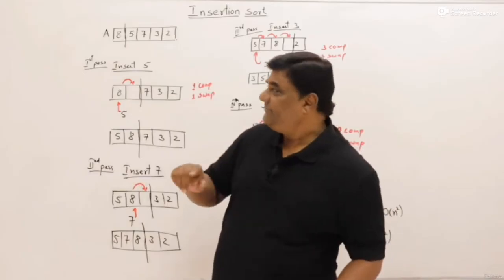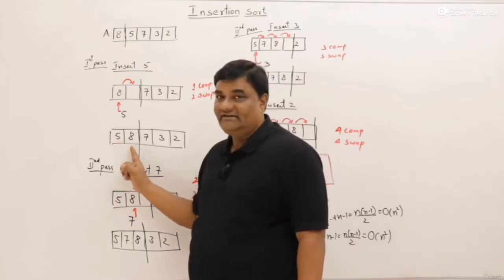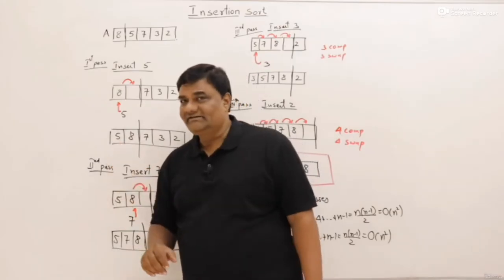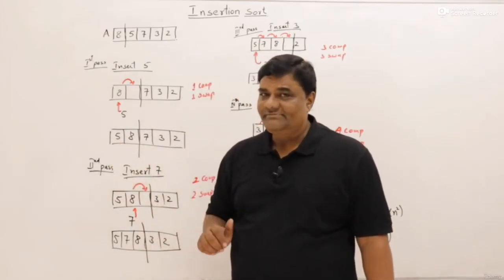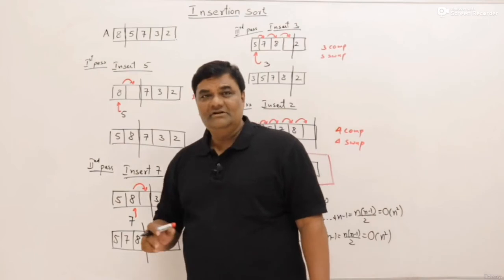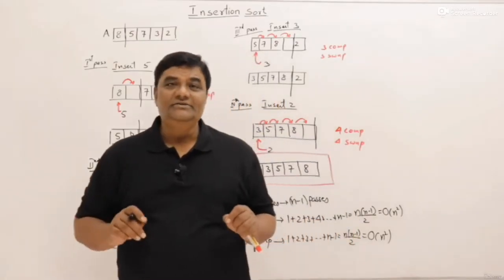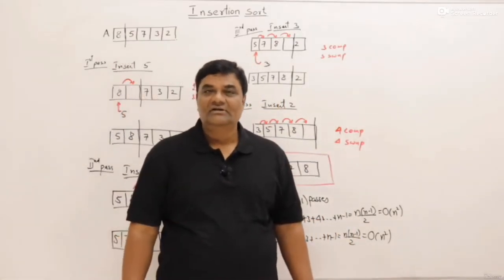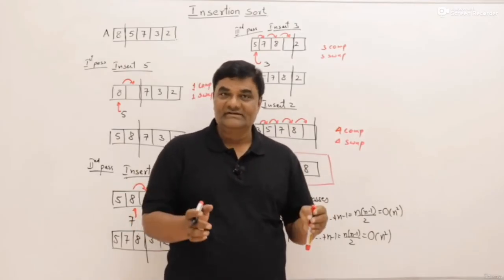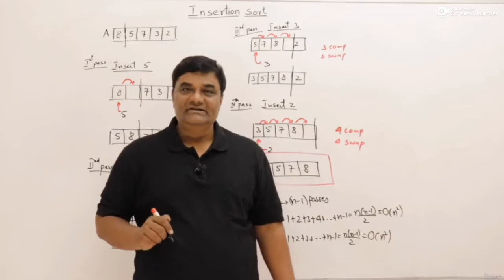First: if we perform just one pass, what is the result? After the first pass we got five and eight. Can we say the first element is the smallest? No. If there were another element nine, can we say eight is the largest? No. So intermediate results — just one pass or two passes — will not give you any useful result in insertion sort. Unlike bubble sort, where one pass gives you the largest element, insertion sort gives nothing useful after partial passes.